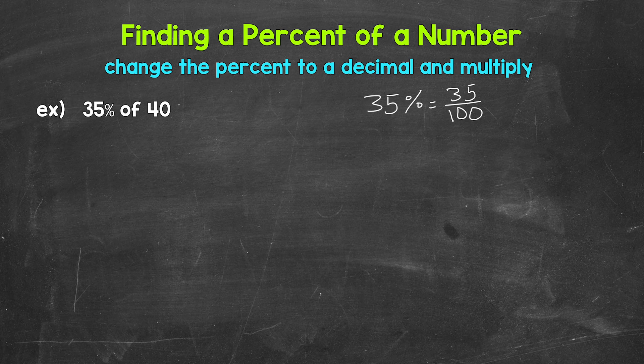But remember, we can always convert between percents, fractions, and decimals. So I like using the decimal form of the percent. Now in order to convert a percent to a decimal, we divide by 100. Because 35% equals 35 over 100 as a fraction. And we divide the numerator, the top number of a fraction, by the denominator, the bottom number of a fraction, to convert a fraction to a decimal. So we can go straight from a percent to a decimal by dividing by 100, since we know the denominator will be 100.